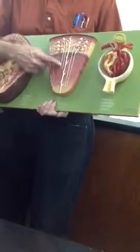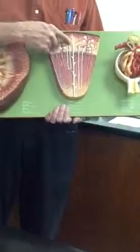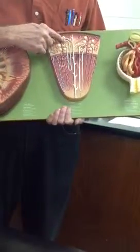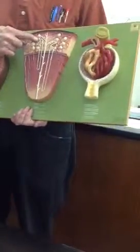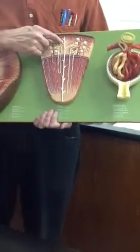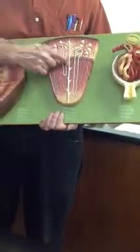Then we have the descending limb of the loop of Henley and the ascending limb of the loop of Henley, all the way up to here where it touches the afferent arteriole. Then we have our distal convoluted tubule, our collecting duct.